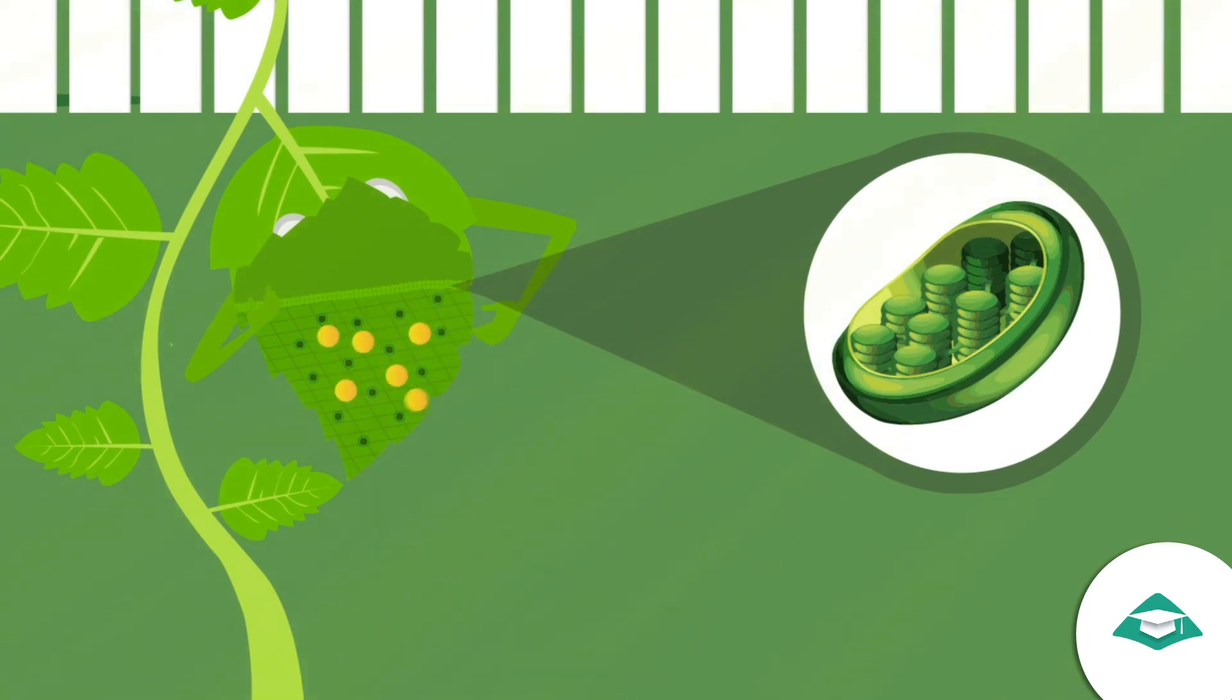In this process, oxygen is produced. The food is prepared in the form of glucose, which provides nutrition to the plant and helps in its growth.